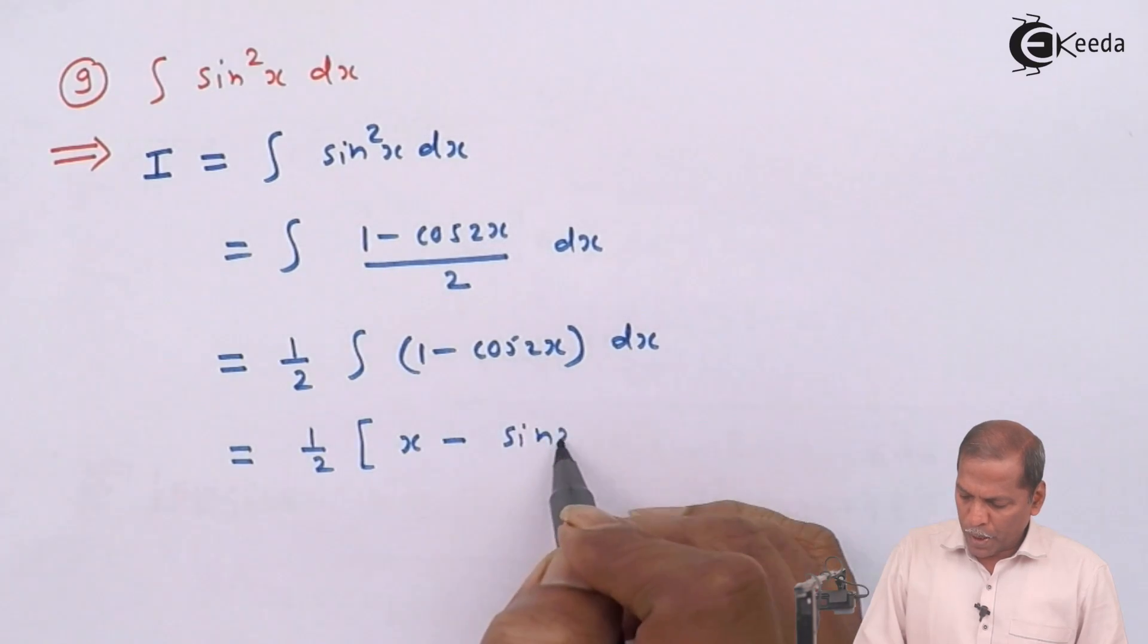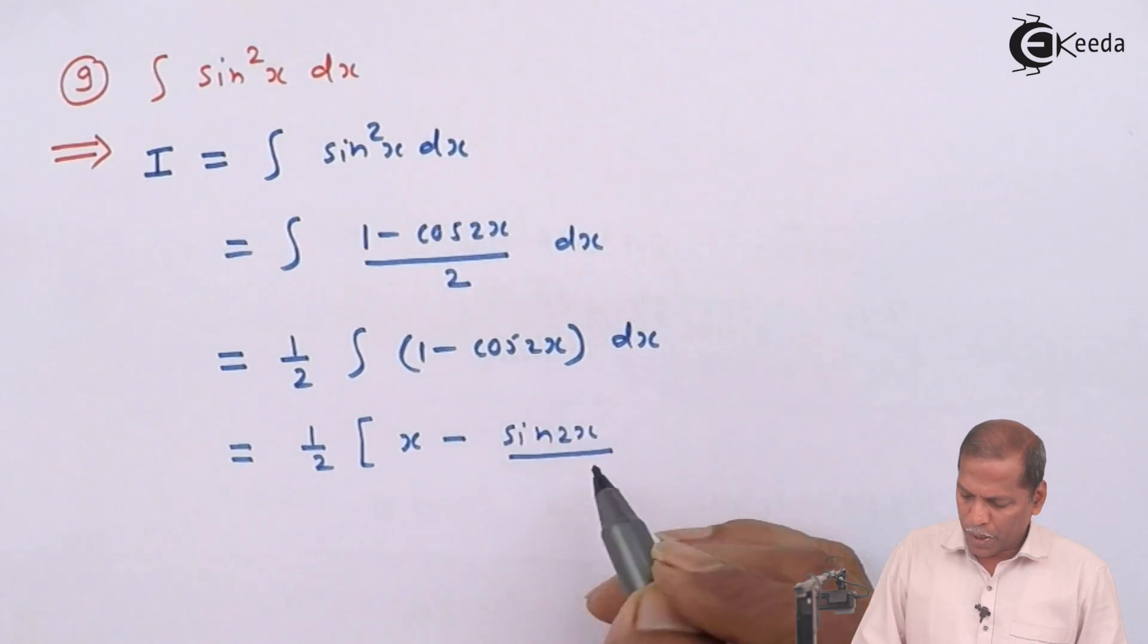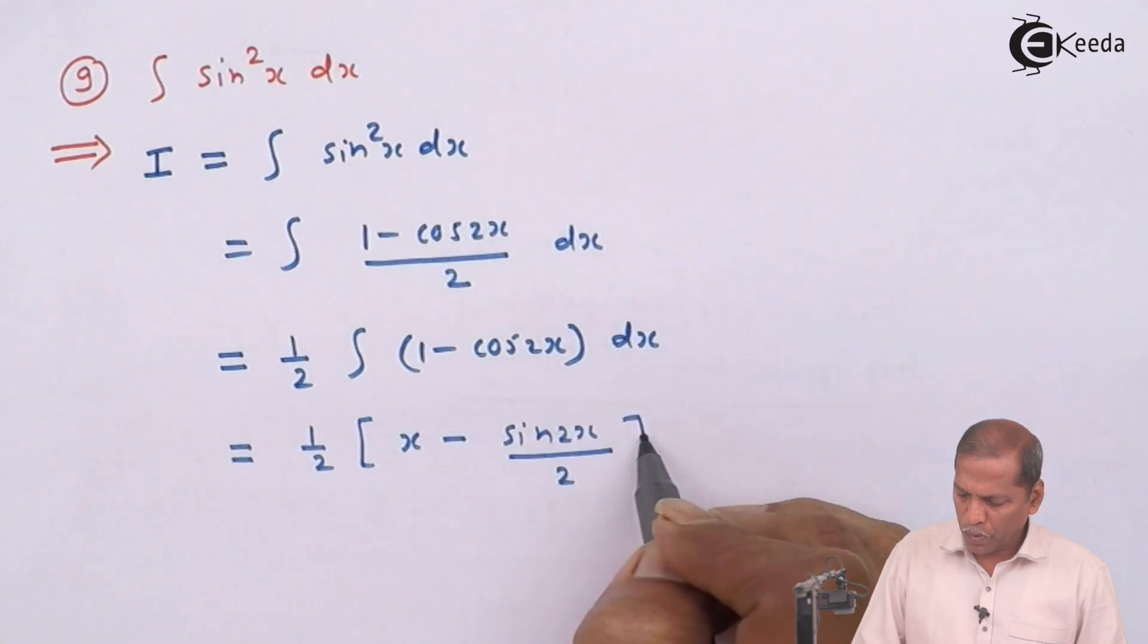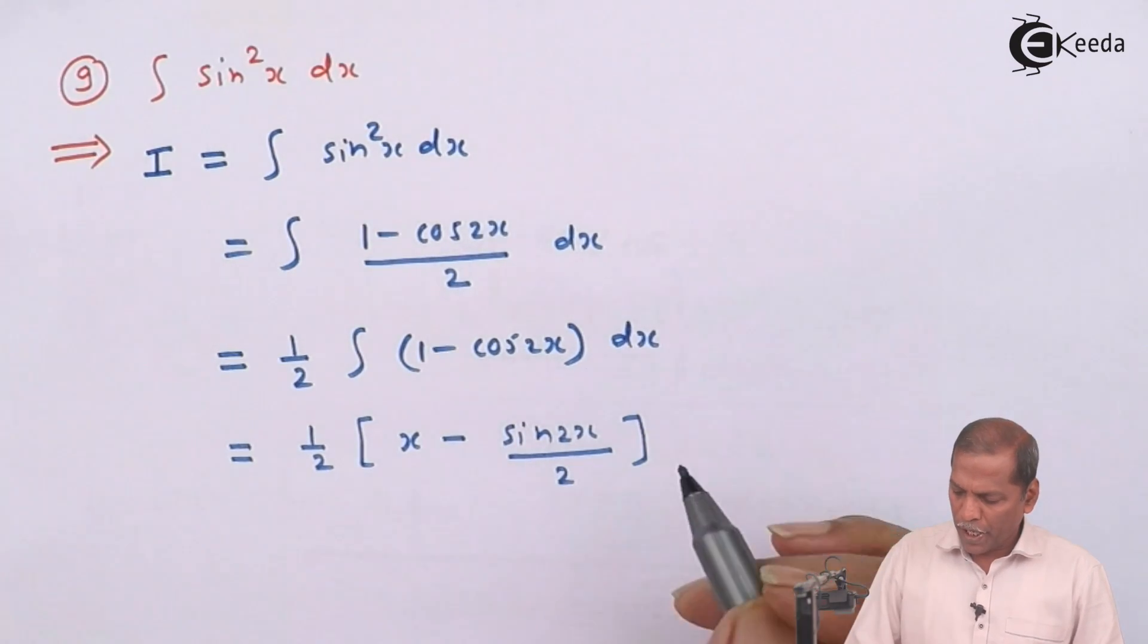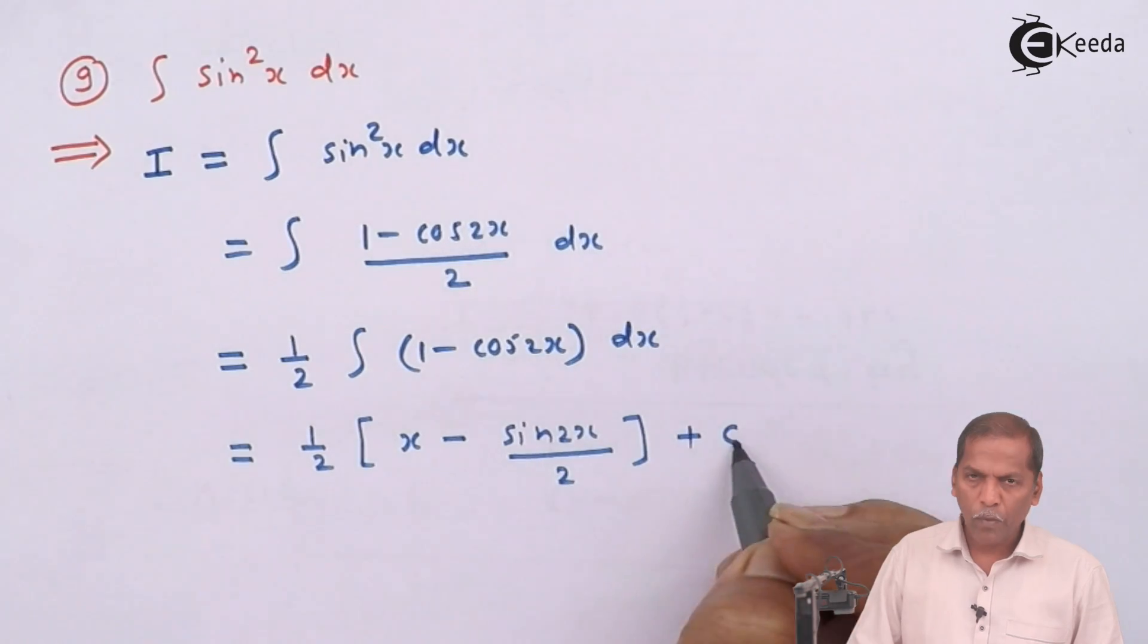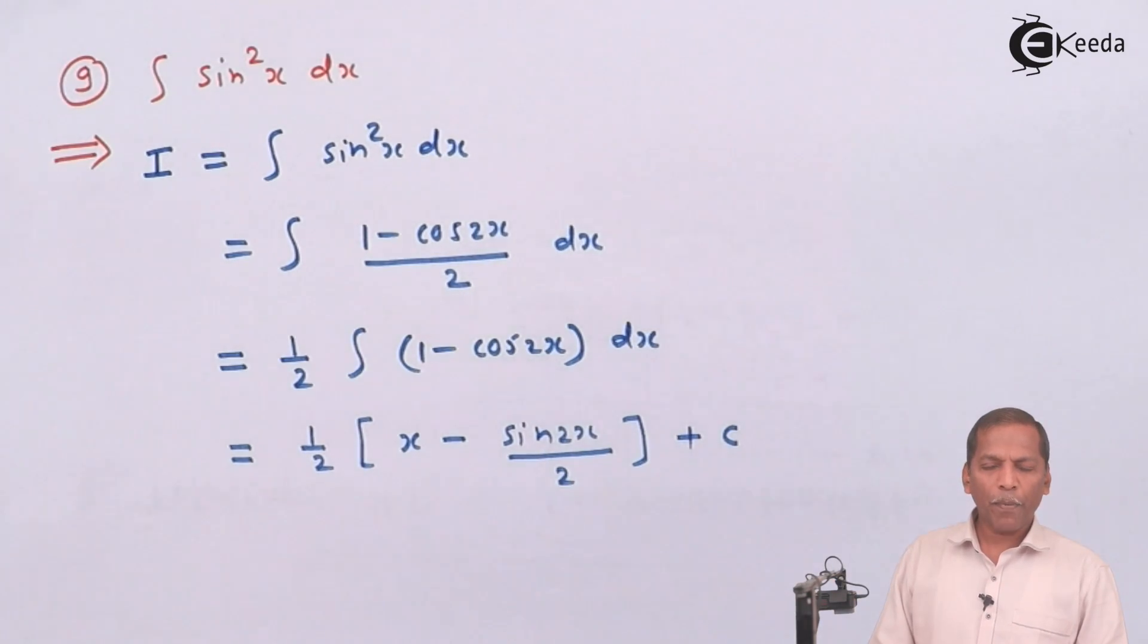So it is sine of 2x upon 2, square bracket complete, and finally we write plus c where c represents constant of integration.